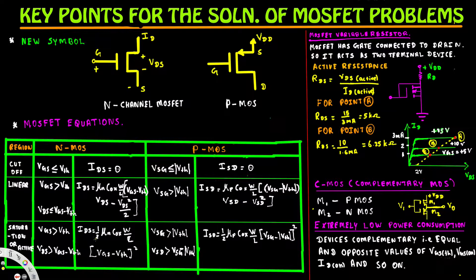In order to be in the saturation or active region for N-MOSFET, VGS has to be greater than V-threshold and VDS has to be greater than VGS minus V-threshold. In that condition, the drain current equals (1/2) · mu_N · COX · (W/L) · (VGS − V_threshold)².